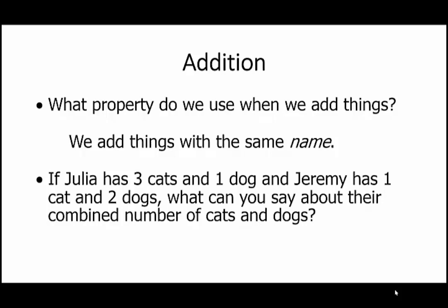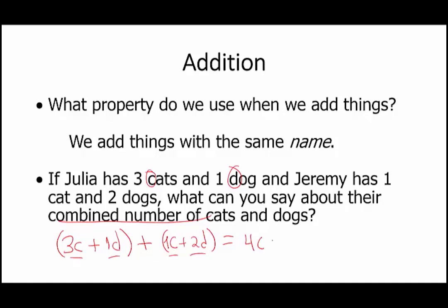Consider this: if Julia has three cats and one dog, and Jeremy has one cat and two dogs, what can we say about their combined pets? Using C for cats and D for dogs: Julia has 3C and 1D. We add Jeremy's 1C and 2D. We know they have 4C and 3D altogether — adding cats with cats and dogs with dogs.